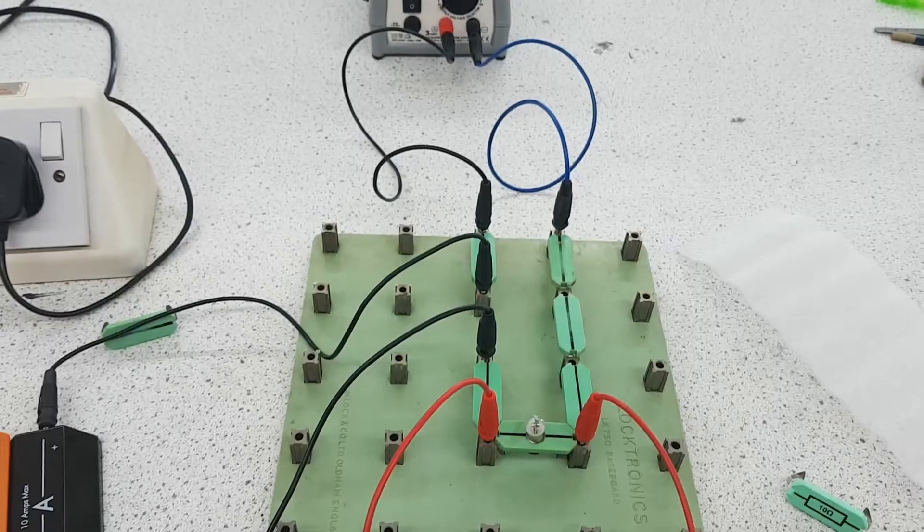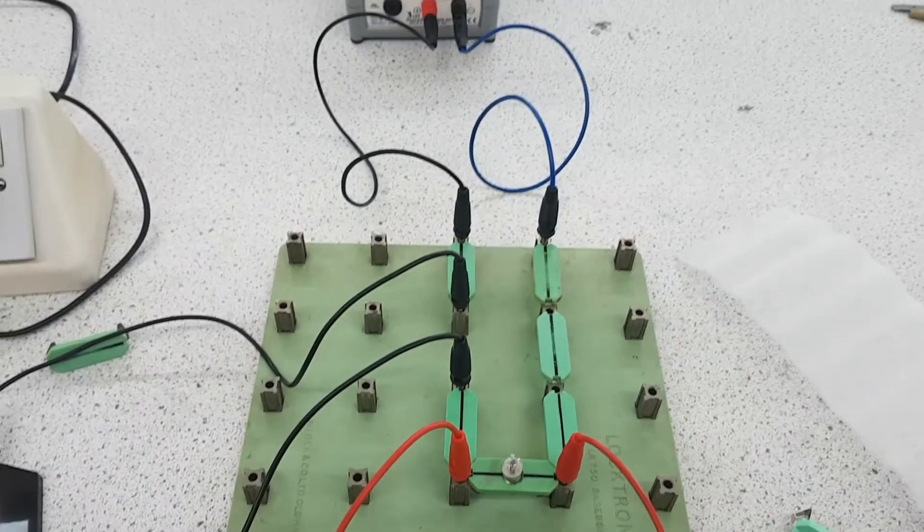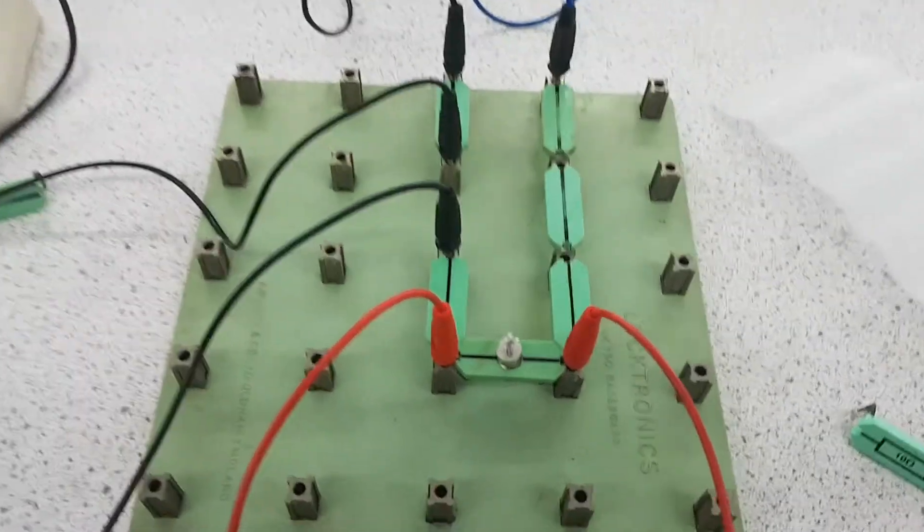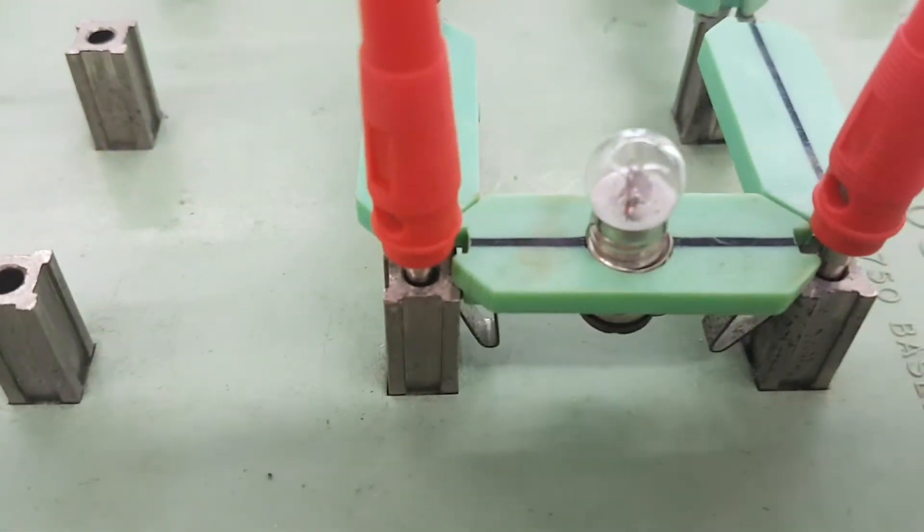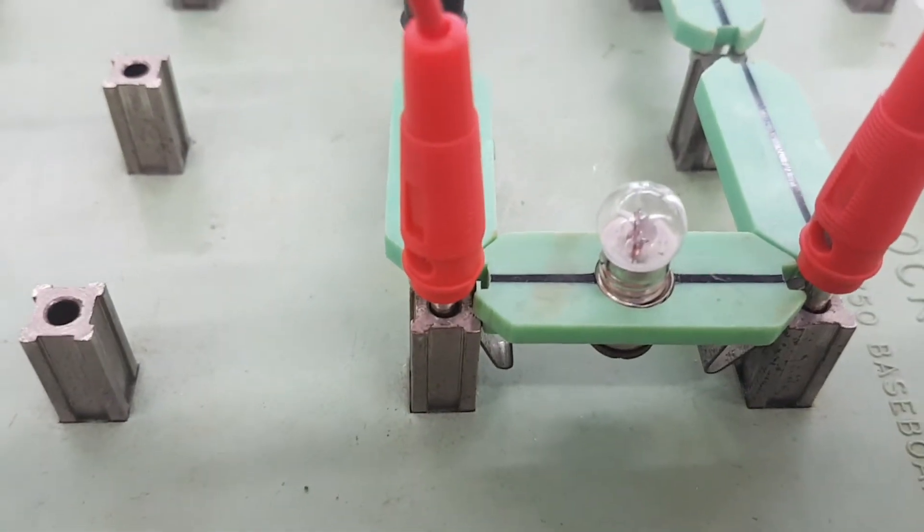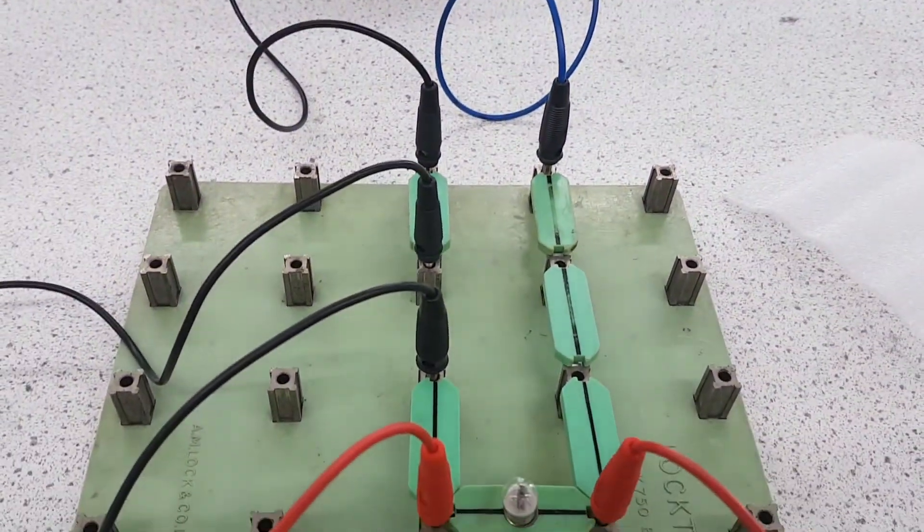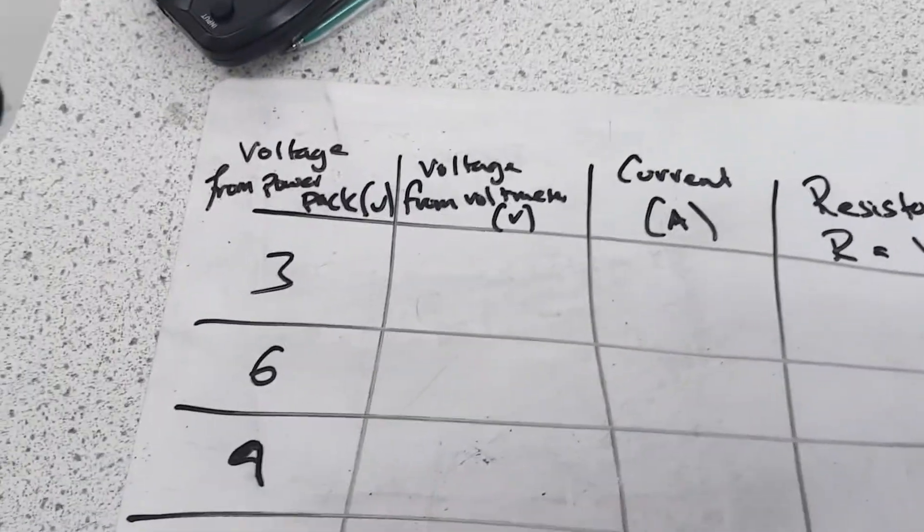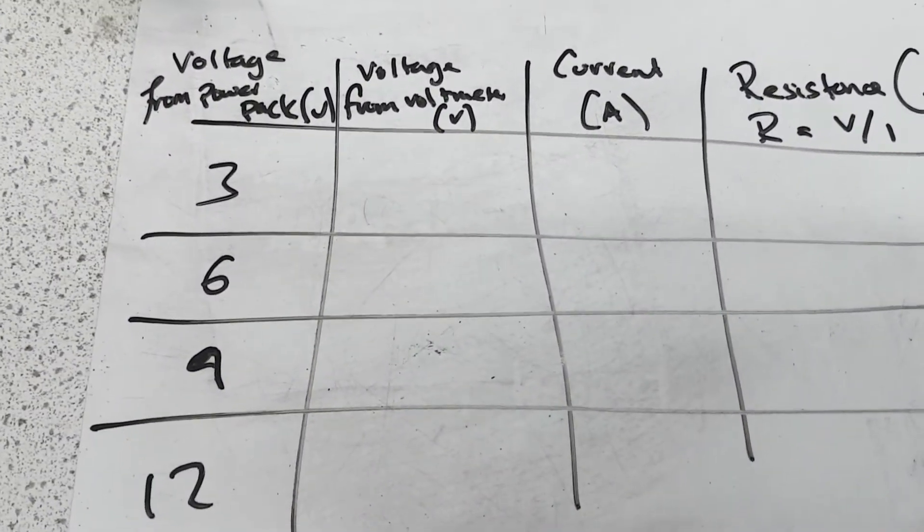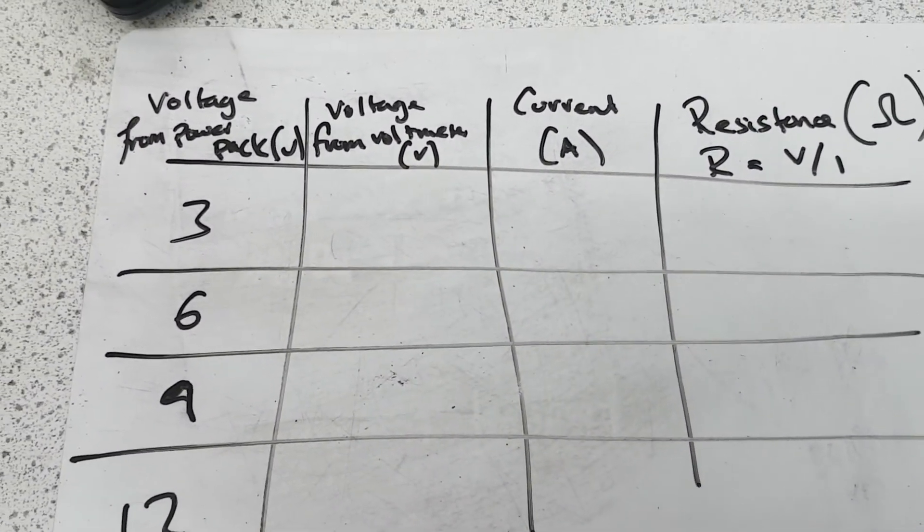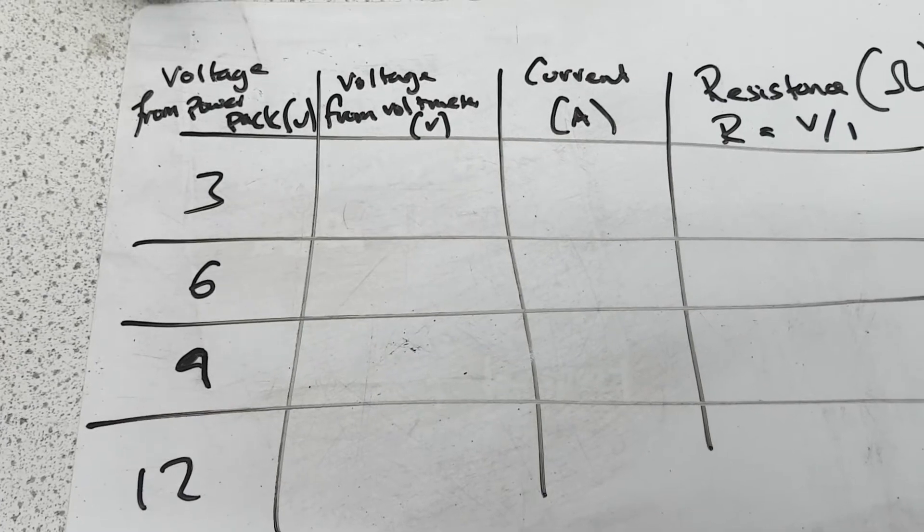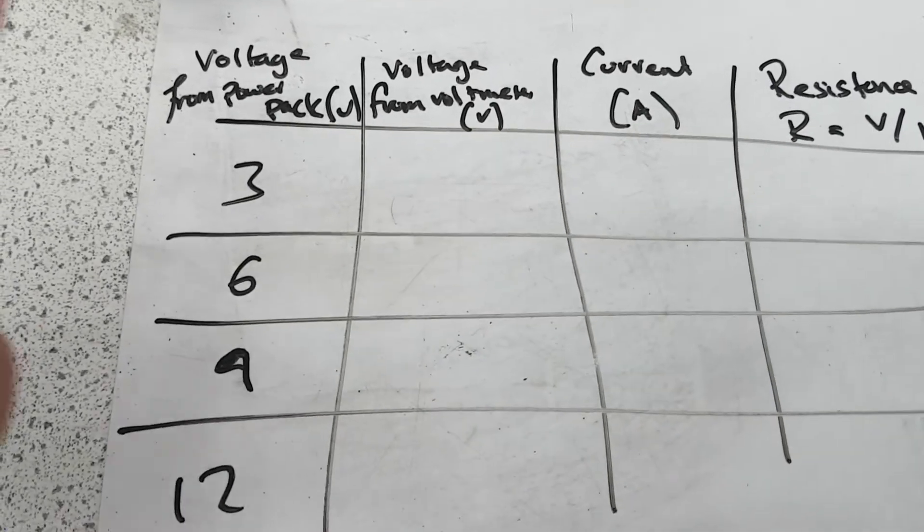Then you're going to carry out exactly the same experiment, but this time with a filament. Okay, that bulb, that lamp, contains a filament. So exactly the same setup, exactly the same table, except this time the table will be for the filament, the bulb, and not the fixed resistor. So your voltages from the power packs can be the same.